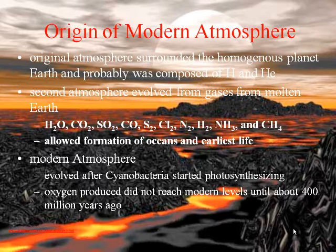The original atmosphere went through three stages. The first surrounded the homogeneous planet before the different layers had settled down, when the earth was just one solid ball of everything mixed together with no difference anywhere. That atmosphere was composed primarily of hydrogen and helium.